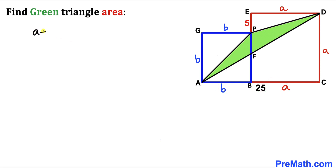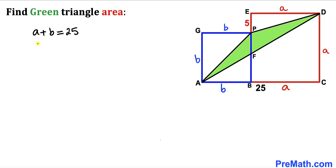We know that segment EP is 5, and that is going to be the difference of a and b, so therefore we can write a minus b equals 5. Now we are going to solve this system of equations for a and b.